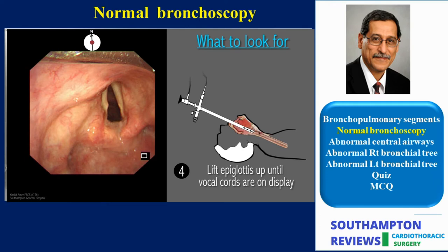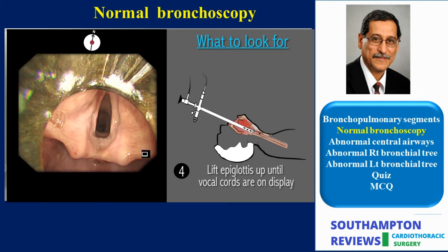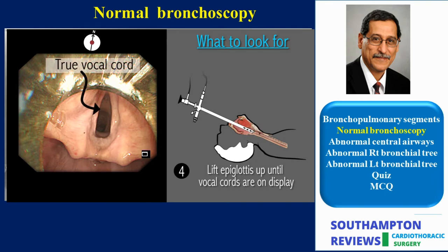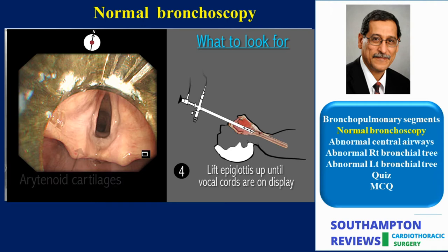Once the epiglottis is lifted and the scope is advanced for a couple of millimetres, the vocal cords should come into view. The operator should make note of any abnormalities of the epiglottis, vocal cords and the larynx. These should be reported to the ear, nose and throat surgeons for advice or follow-up, preferably with a photo of the abnormality.